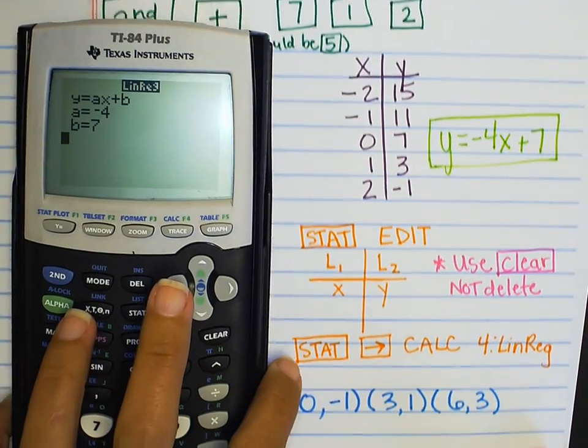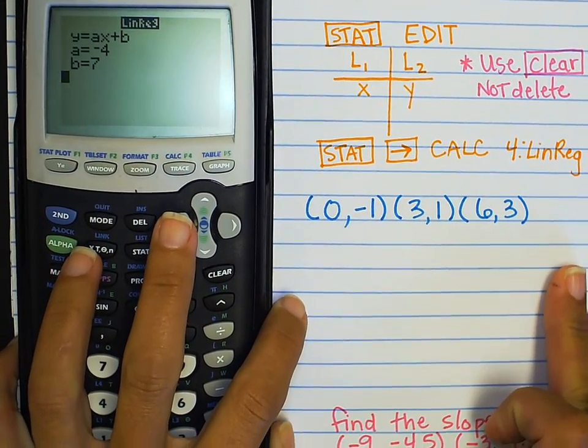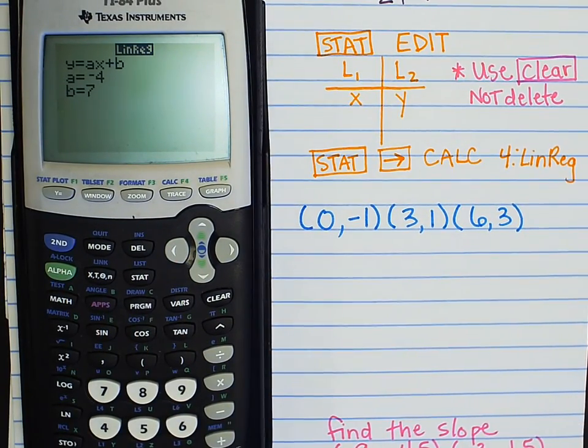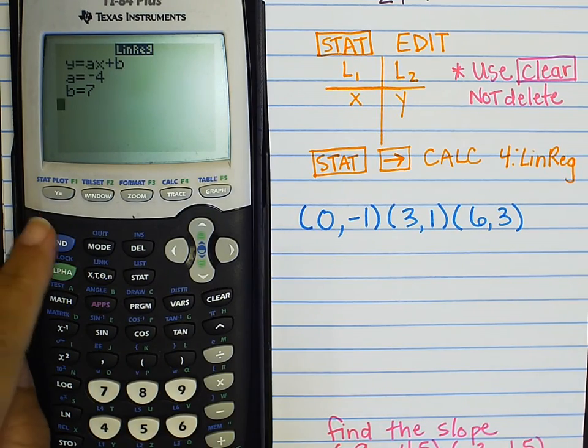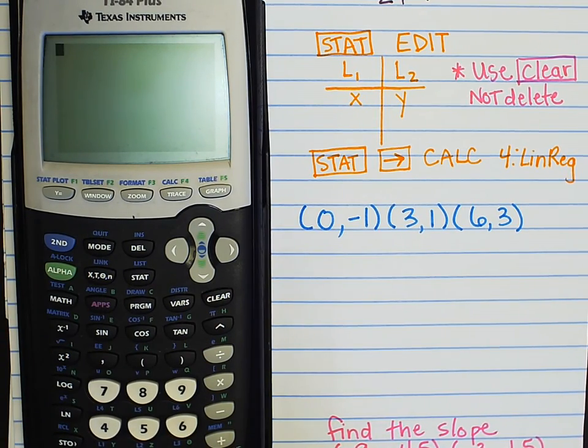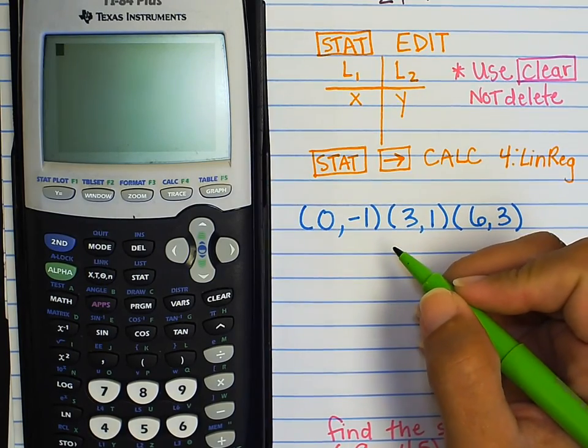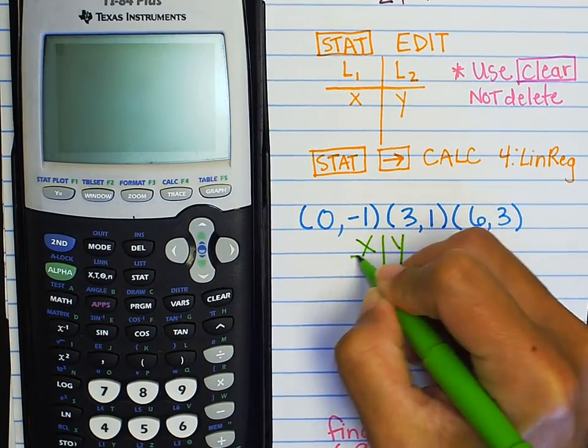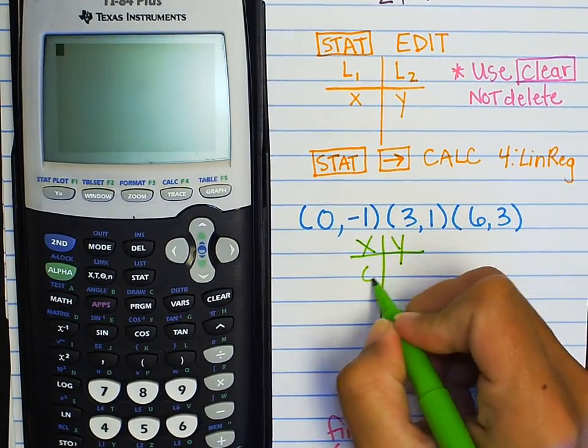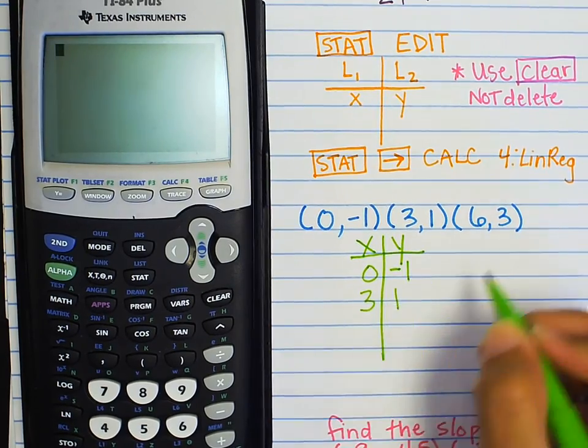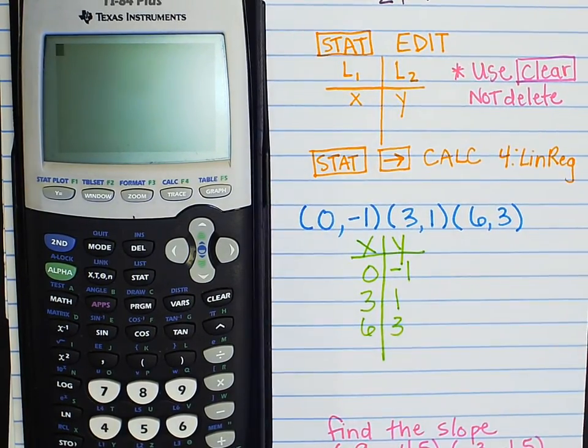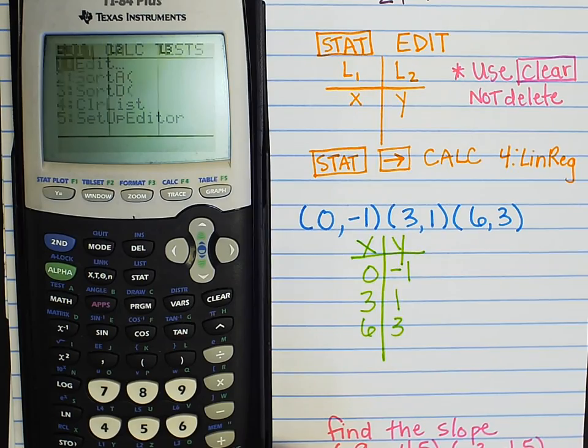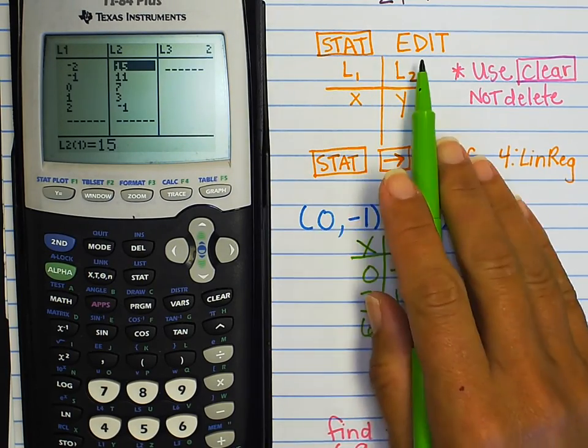Okay. Let's try another one. All right. So, this time I am given a list of points. What is a list of points? A list of points can be written as a table, right? If you're given a table, you're given a bunch of points. If you're given points, you're really given a table in a different format. I'm actually going to write these as a table. My zero with my negative one, three one, and six three. So, I have my table. So, I'm going to go to stat. I'm going to go to edit. Stat, edit to get it started. And now there's already numbers in here.